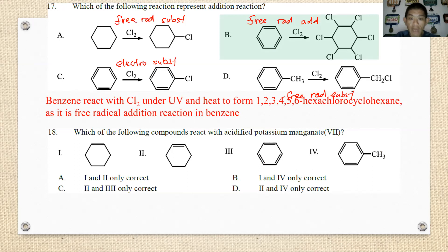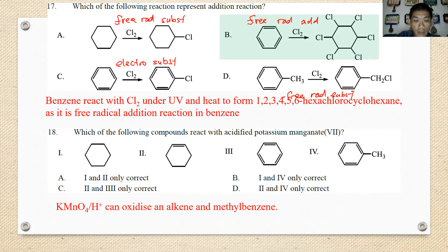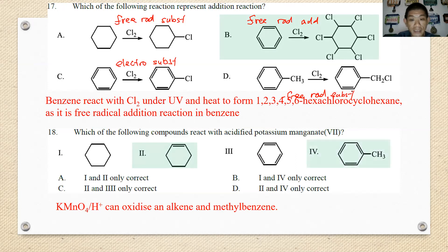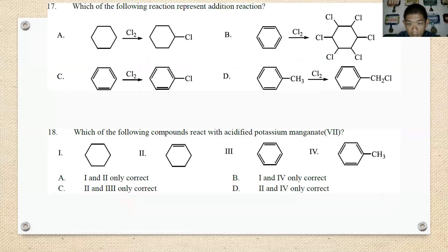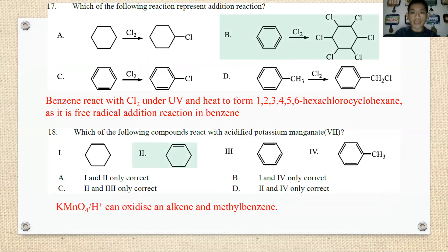Number eighteen: which of the following compounds react with acidified potassium manganate? Alkenes can easily react with potassium manganate — so compound two can react. Also, any primary or secondary alkyl benzene such as methylbenzene can easily react with acidified potassium manganate. So the answer includes compounds 2 and 4 — answer D.